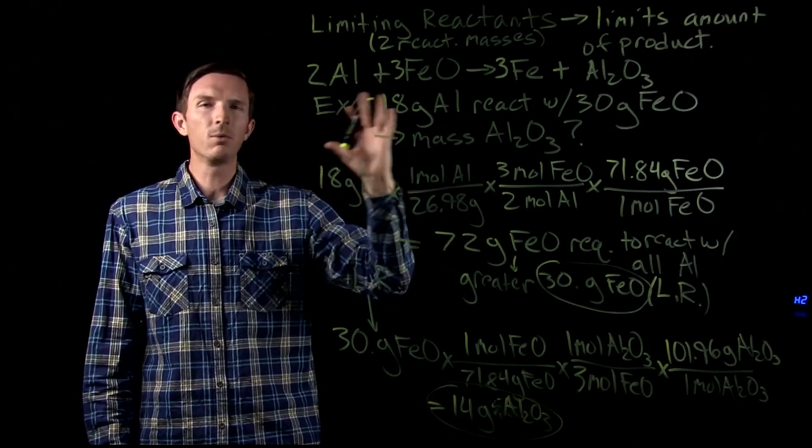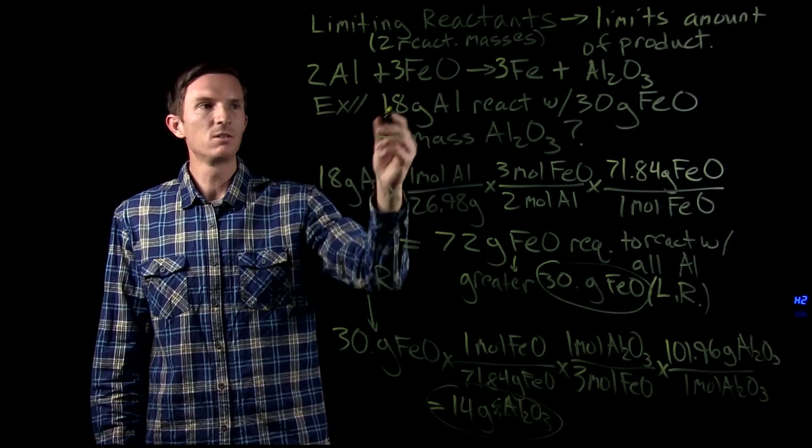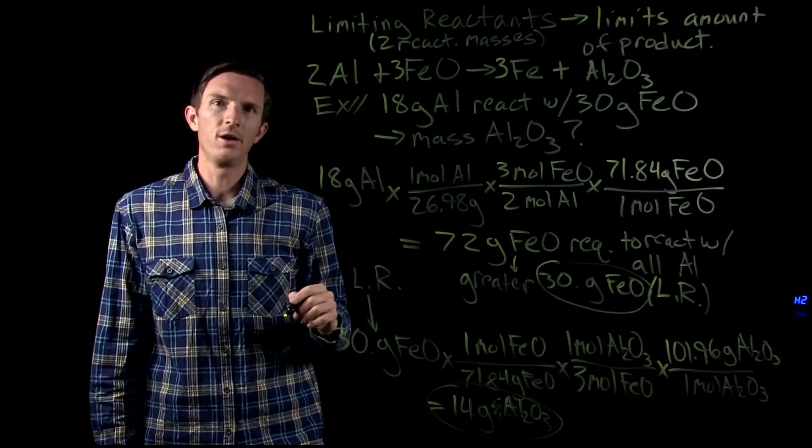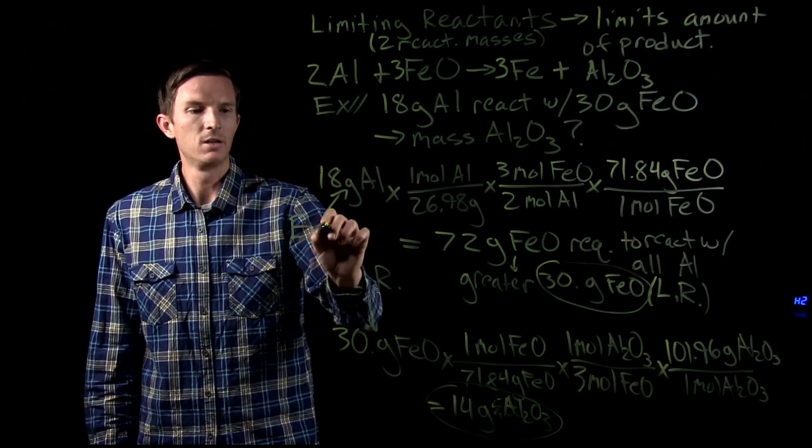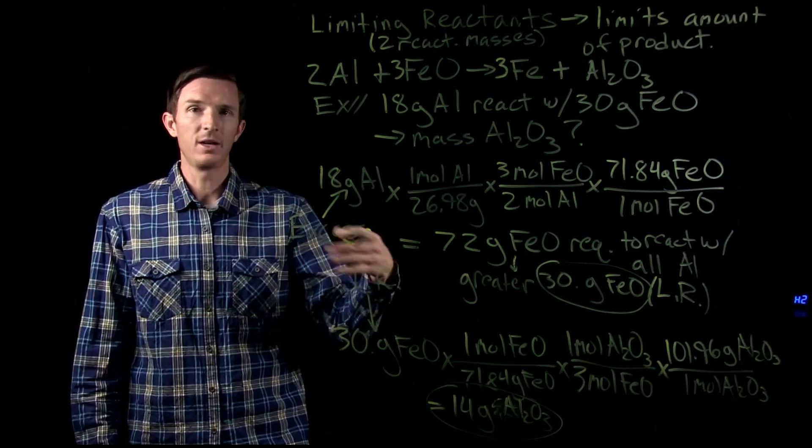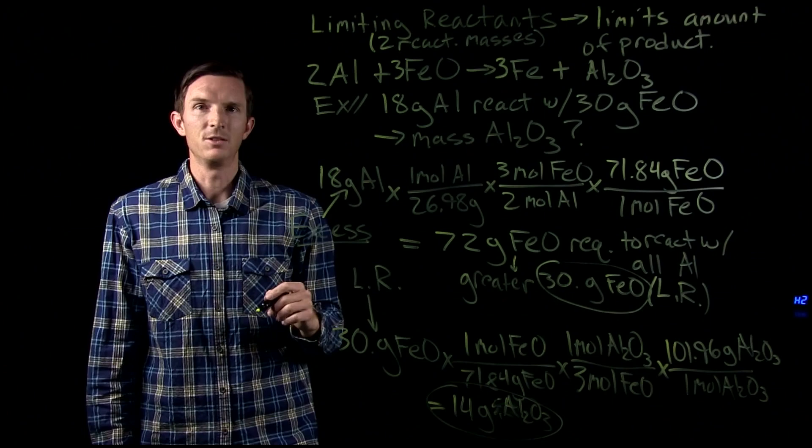So we're going to see this is going to be the way that we're going to think through limiting reactants. We look at the amounts of each, figure out which one is going to be fully consumed, which in this case is our iron oxide, and that means we're going to have extra or excess amount of our aluminum, because we're not going to get rid of all of it based upon the amount of iron oxide that we have. I'll see you in class.